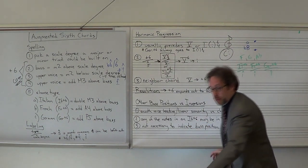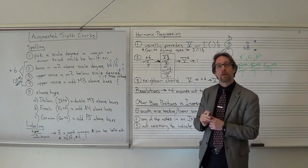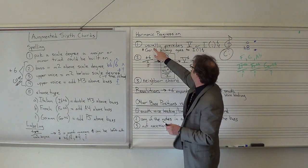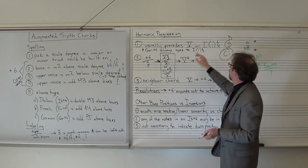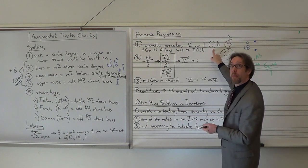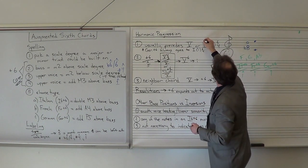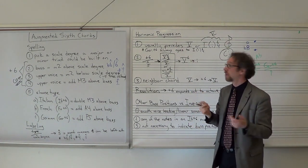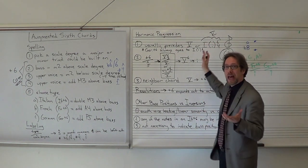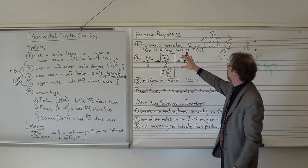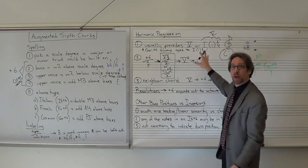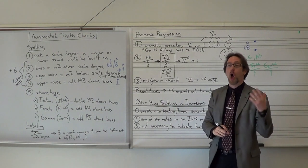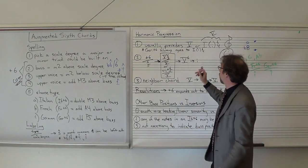The next thing is how augmented sixth chords fit into harmonic progressions. Usually — since the most common is of scale degree 5 — it's going to precede a V chord. Or another option is a cadential I-6-4, when the I chord is functioning like a V. German augmented sixth chords, however, always go to I-6-4; they don't go directly to V.